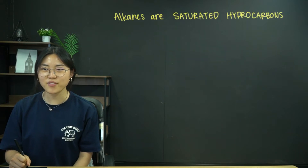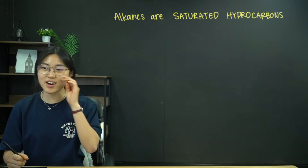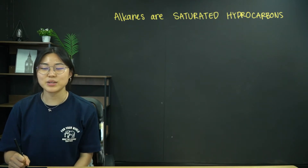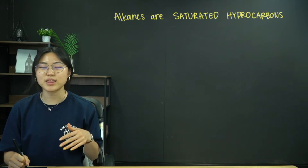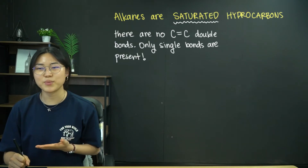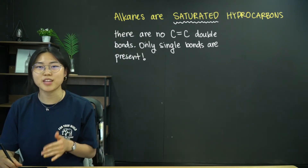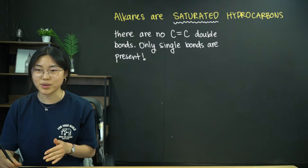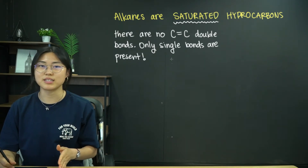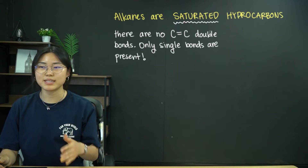I'm going to start off by saying that alkanes are saturated hydrocarbons. So let's dig into what those two words mean. Saturated means there are no carbon-carbon double bonds — there are only single bonds present. That is what it means by saturated.